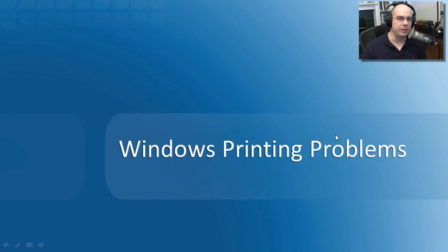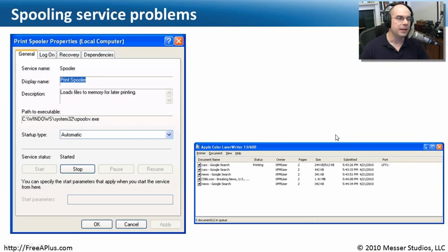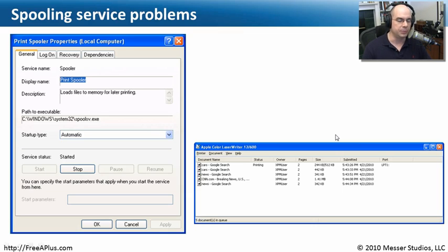Is there anything more annoying than a printer that just won't print? You send the print command, you have a document ready to go, and the printer just sits there. When you print from Windows, it actually saves the print job as a file on your computer and puts it into something called the spooler. The spooler is then responsible for taking that saved file and actually performing the printing process.